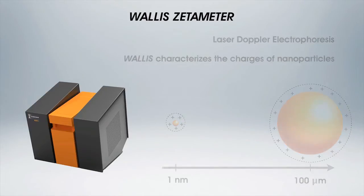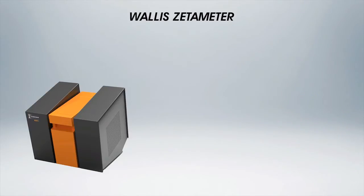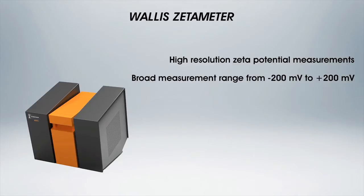Its signal acquisition chain, without correlator, is specially optimized for high-resolution zeta potential measurements while preserving a broad measurement range. Indeed, Wallace can measure zeta potential from minus 200 millivolts to plus 200 millivolts with an unequaled 0.1 millivolt resolution.